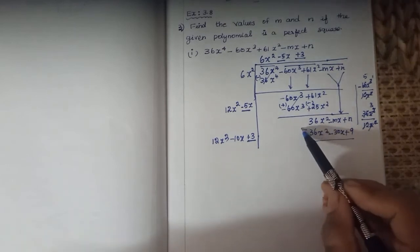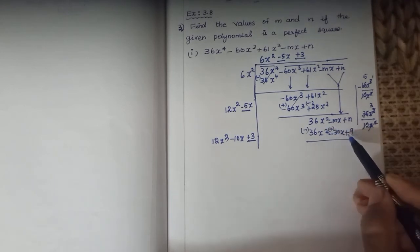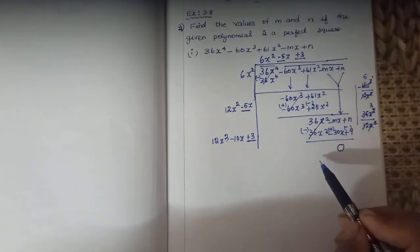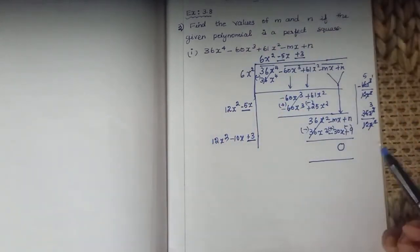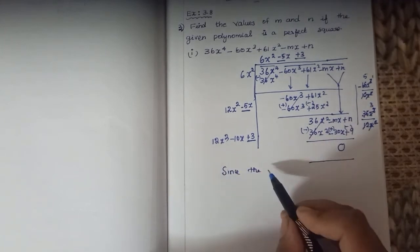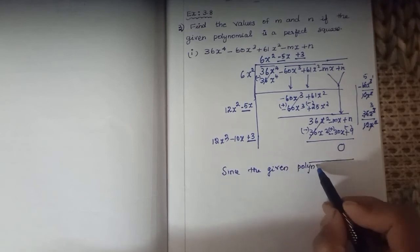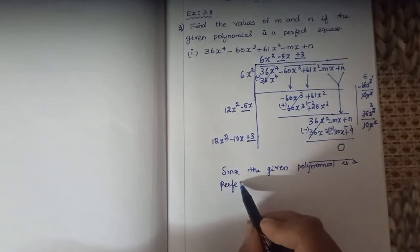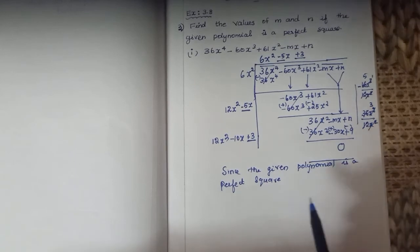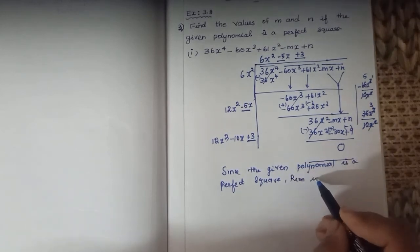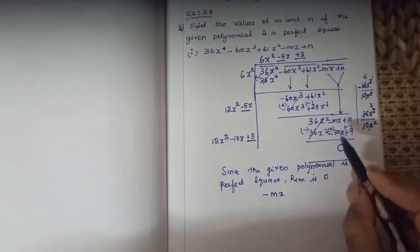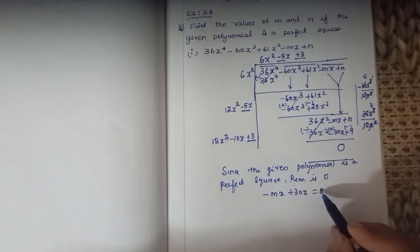Next, change the signs to subtract: plus becomes minus, minus becomes plus, plus becomes minus. The first terms cancel. Now you have to get a remainder of 0, because the given polynomial is a perfect square. So the remainder must equal 0.